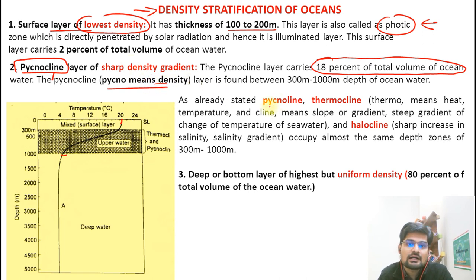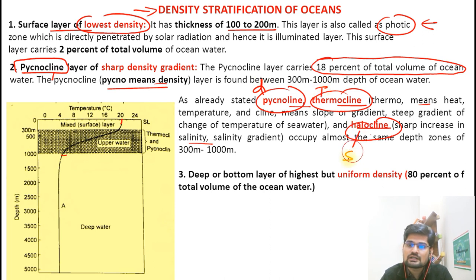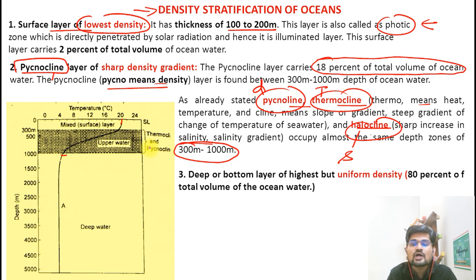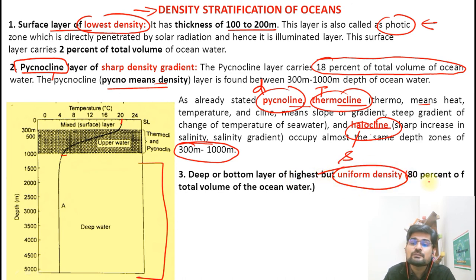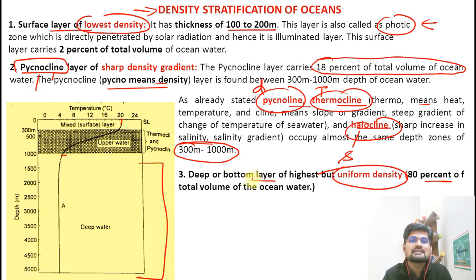The pycnocline layer shows a sharp density change. Remember that pycnocline, thermocline, and halocline are all linked — pycno is for density, thermo is for heat, halo is for sharp change in salinity. These all represent the same 300 to 1000 meter layer. The deep bottom area is the third portion, with uniform density, temperature, and largely uniform salinity, comprising 80% of total ocean volume.